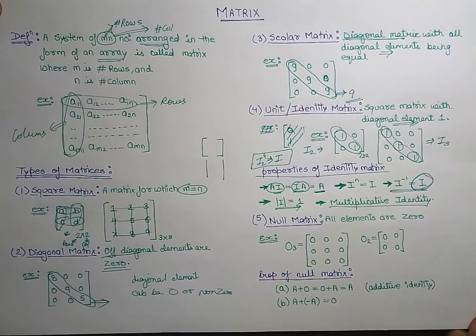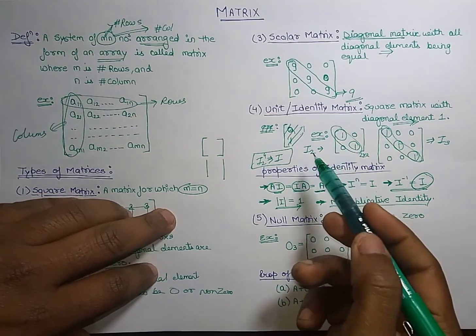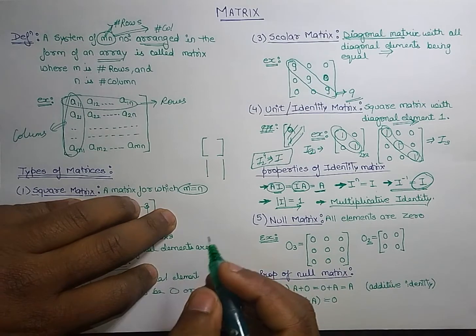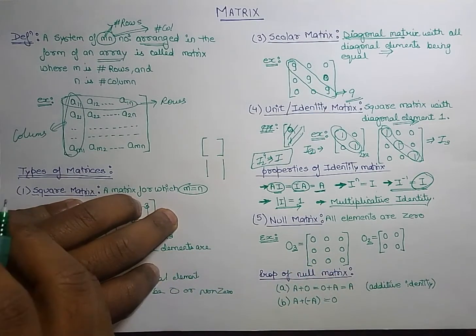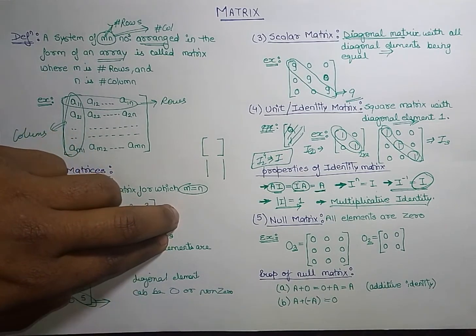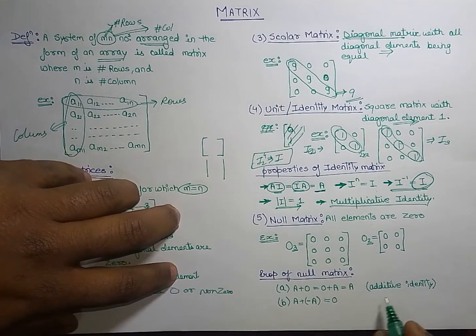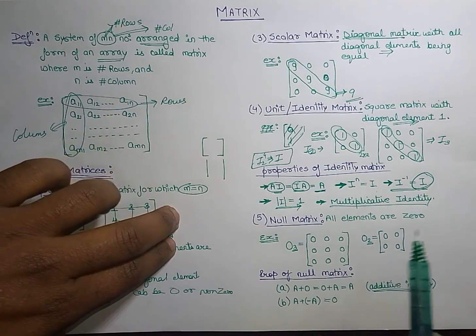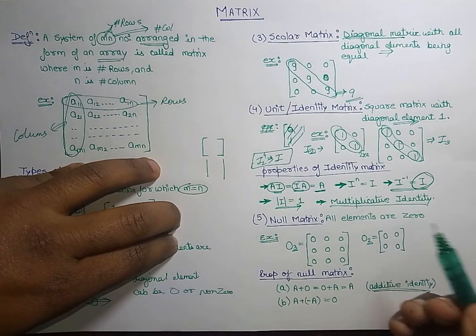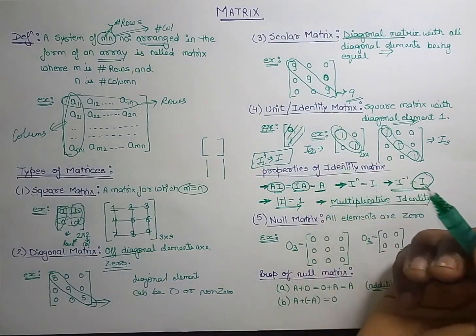Next is the null matrix. A null matrix is one where all elements are zero. We represent the two by two null matrix as O2 and the three by three as O3. You can see all elements are zero in these matrices. The property of the null matrix is that adding it to any matrix gives back that same matrix — so it is an additive identity.